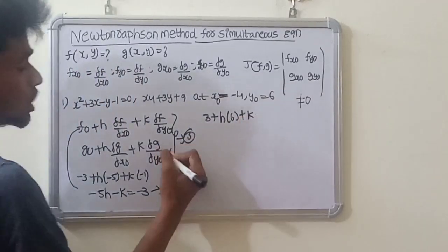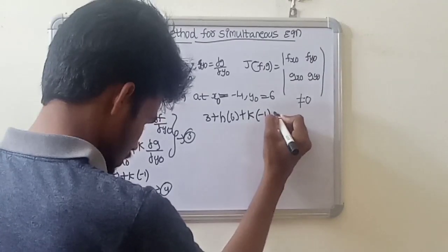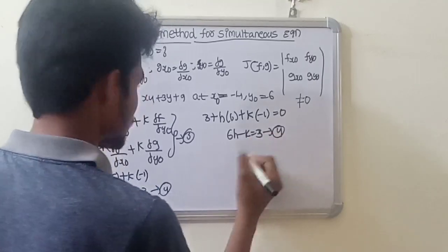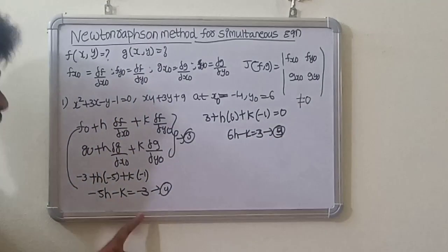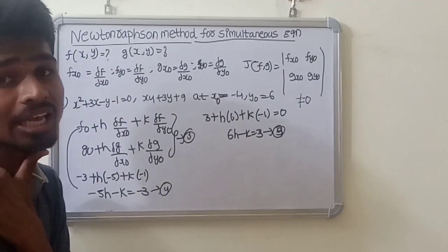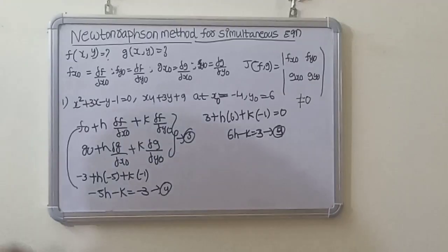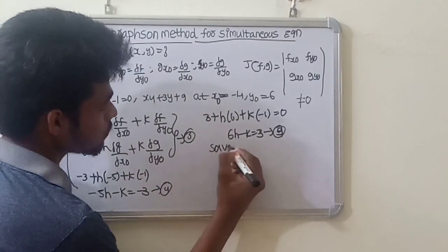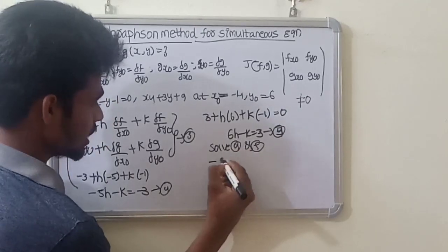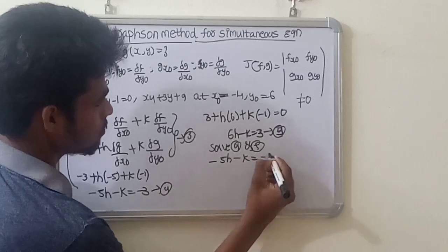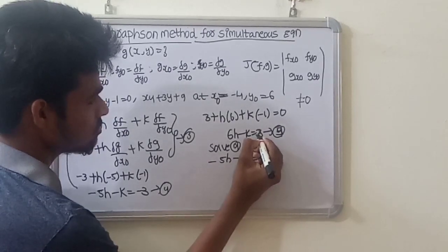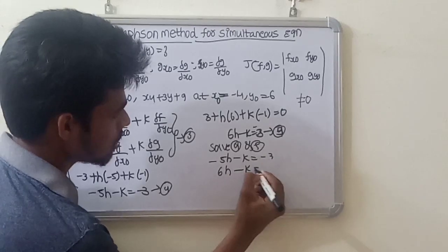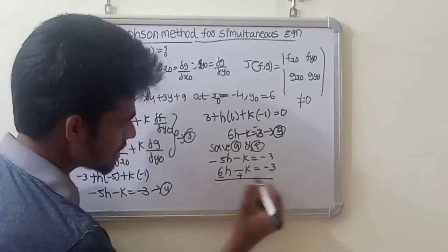Writing g0 equals minus 1. The second equation becomes: 6h minus k equals minus 3. Wait — 6h minus k equal to 3. This is equation 5.